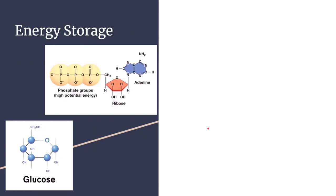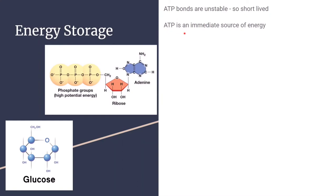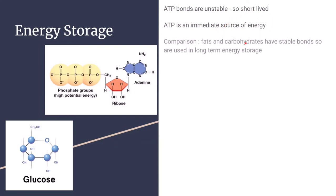ATP bonds are unstable because of the negatively charged phosphates repelling each other, making ATP molecules quite short-lived — eventually the bonds will break. This means ATP is an immediate source of energy, one that we use quickly and do not leave for long-term storage; we create it as we need it. In comparison, fats and carbohydrates have stable bonds, which allow them to form long-term energy storage molecules.